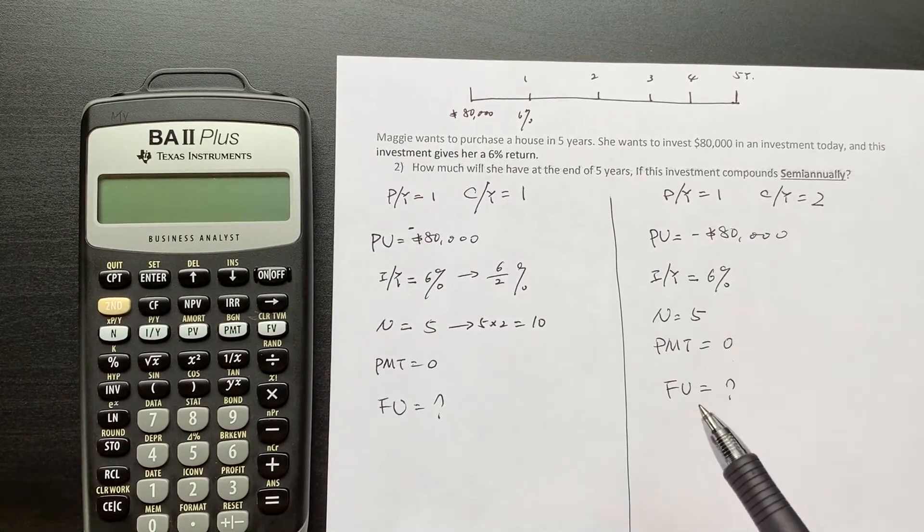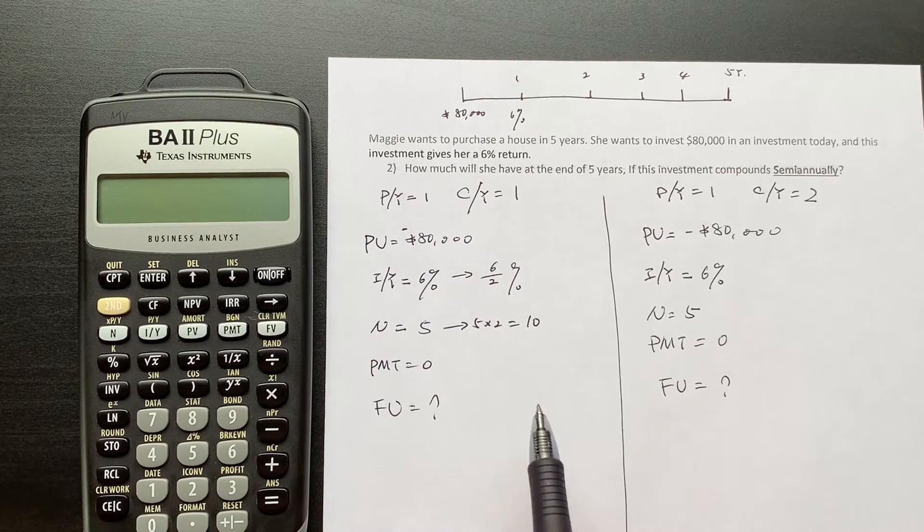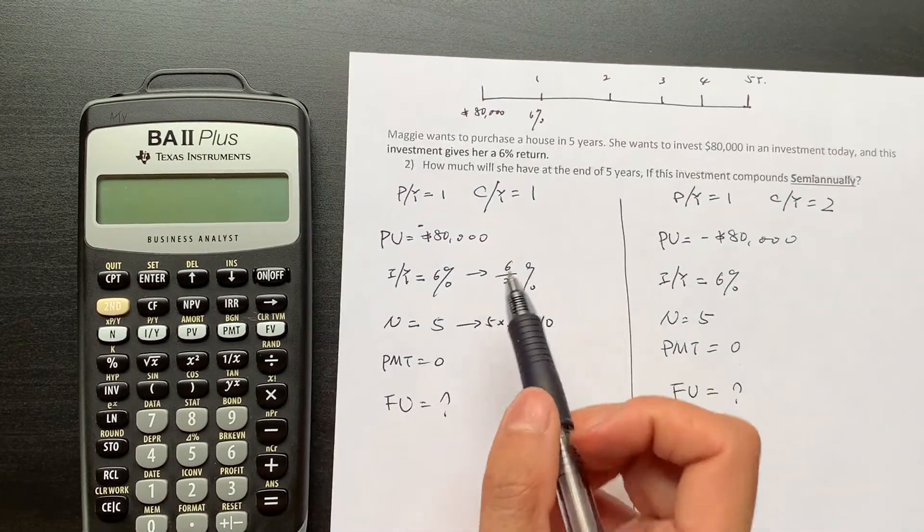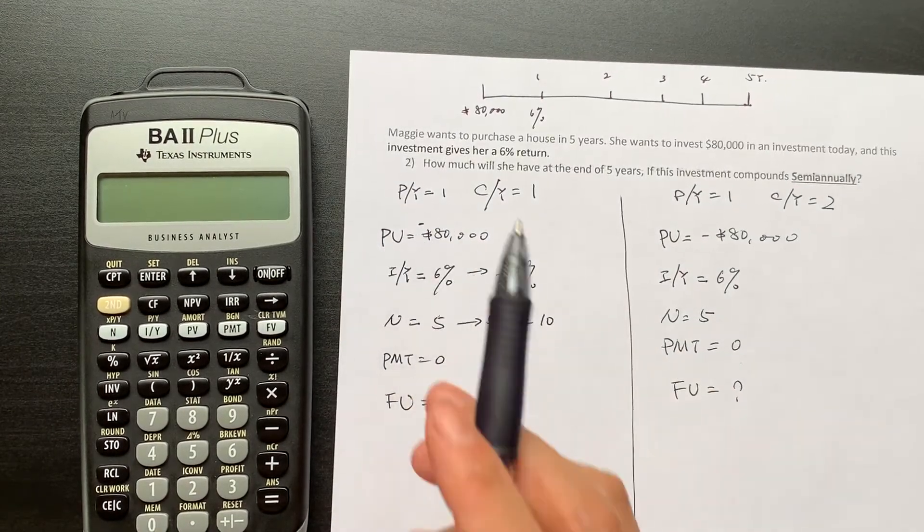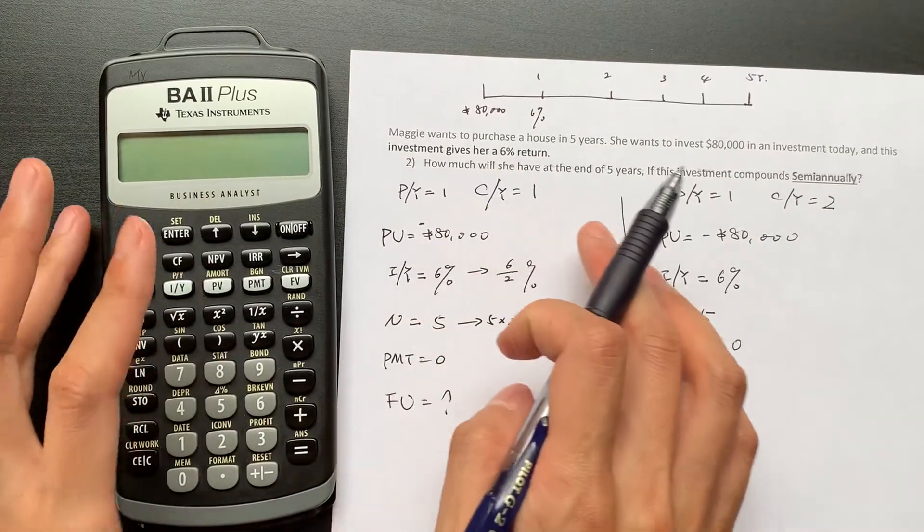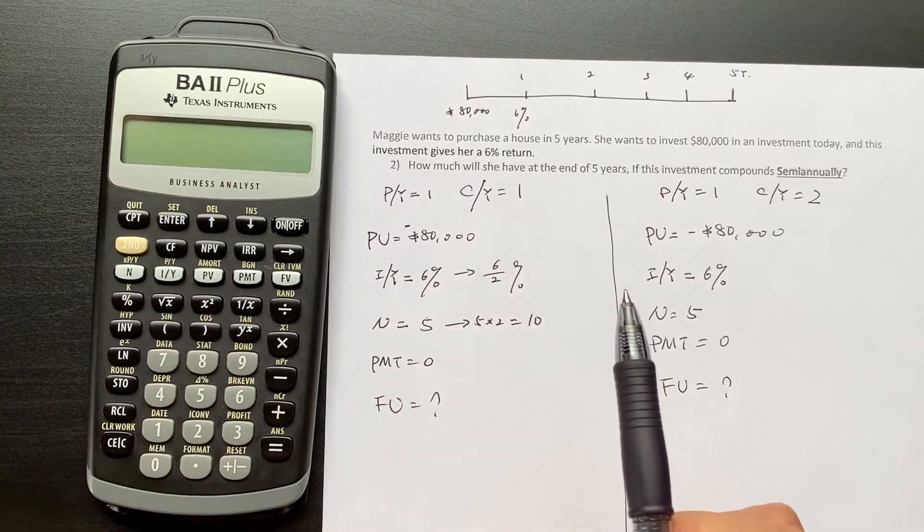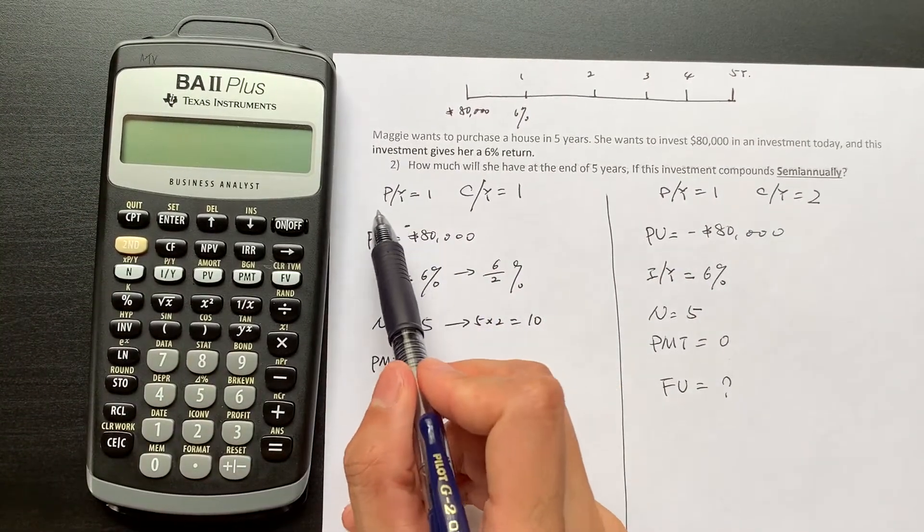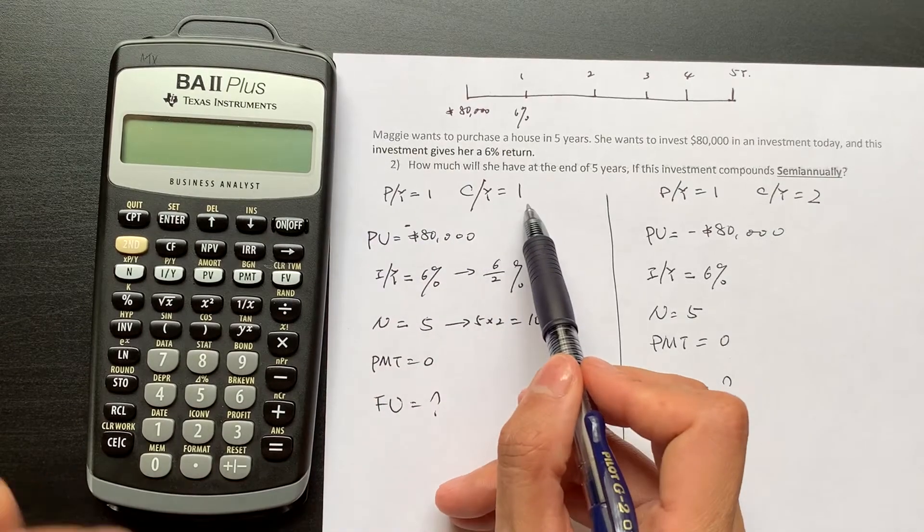I'm going to show you two ways to do it using the financial calculator. First, you can see, but mainly if you want, leave your calculator PY equal to one, CY equal to one.